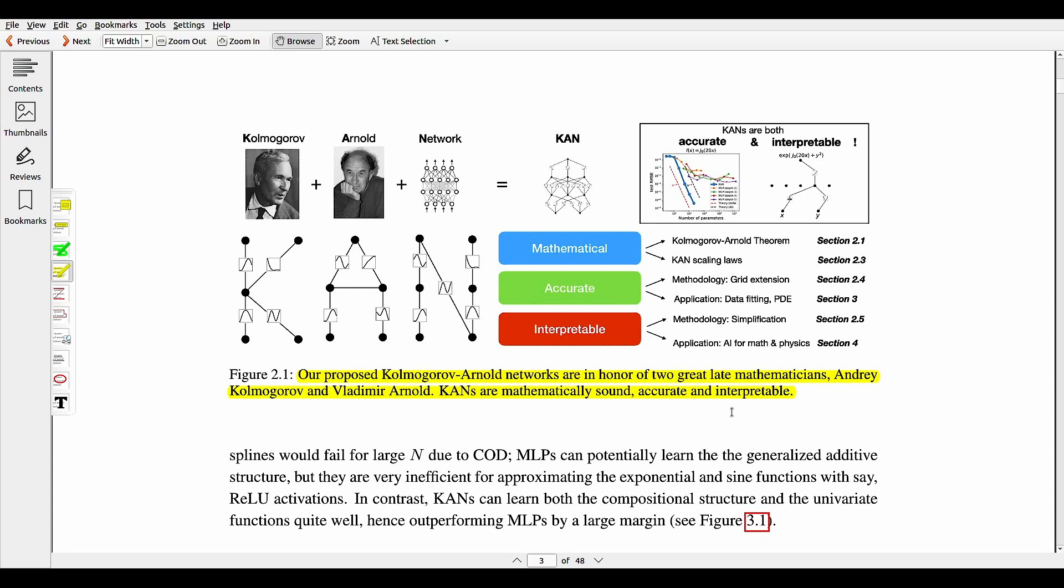The paper explicitly parameterized the Kolmogorov-Arnold representation with neural networks. In honor of the two great late mathematicians Andrew Kolmogorov and Vladimir Arnold, the researchers of this paper call this technique Kolmogorov-Arnold networks. From the mathematical aspects, MLPs are inspired by the universal approximation theory, or UAT, while KANs are inspired by the Kolmogorov-Arnold representation theorem.